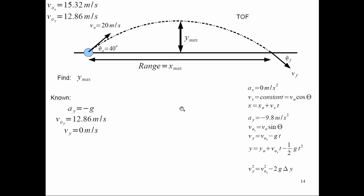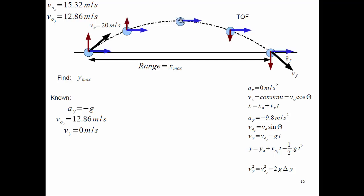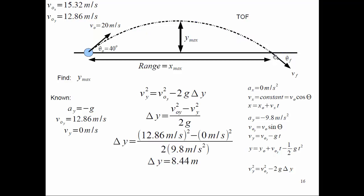Let's find Y max first. We know the acceleration in the Y direction is minus G, we know the initial velocity, and we know the final Y velocity at the top is 0 meters per second. Using the equation: final Y velocity squared equals initial Y velocity squared minus 2G*delta-Y, we solve for delta Y. We get 12.86 squared minus 0 divided by 2 times 9.8, giving us a maximum height of about 8.4 meters.